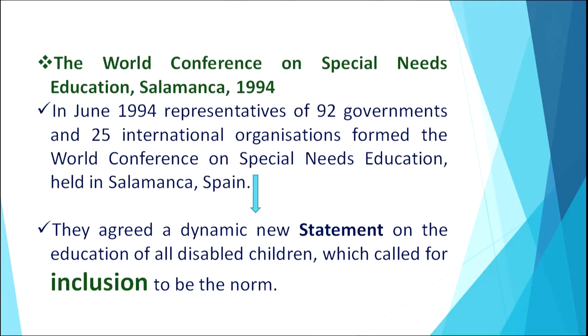Another important breakthrough in the field of children with disability was the World Conference on Special Needs Education held in Salamanca in June 1994. Representatives of 92 governments and 25 international organizations formed this conference held in Salamanca, Spain. They agreed on a dynamic new statement on the education of all disabled children which called for inclusion to be the norm.